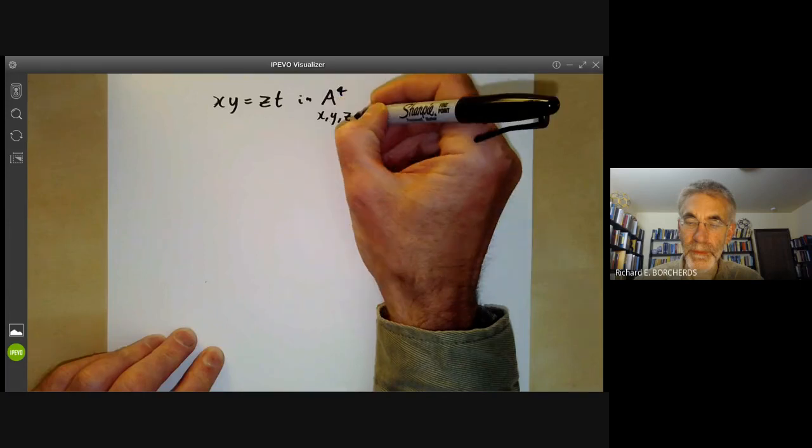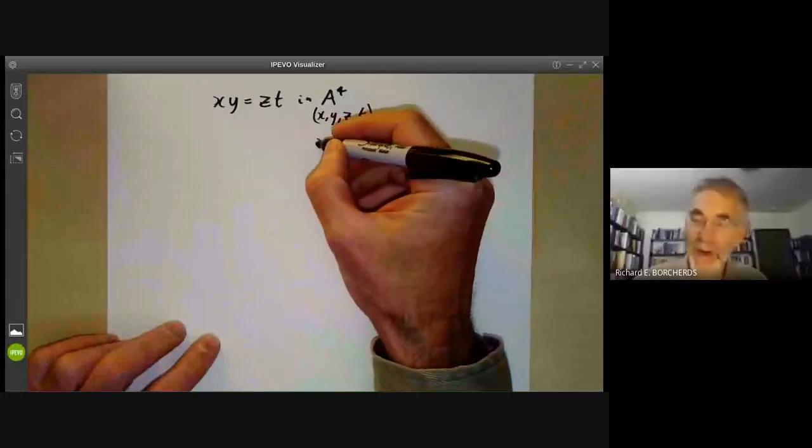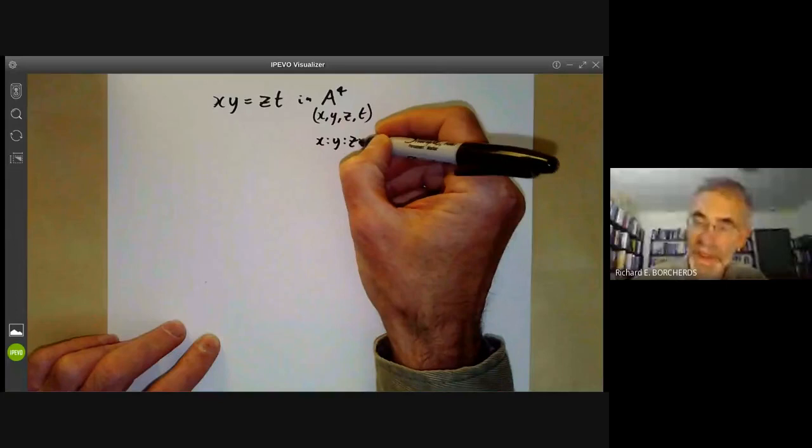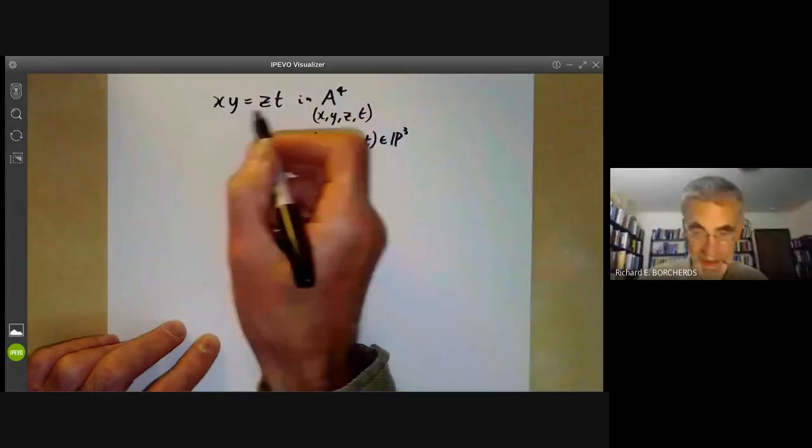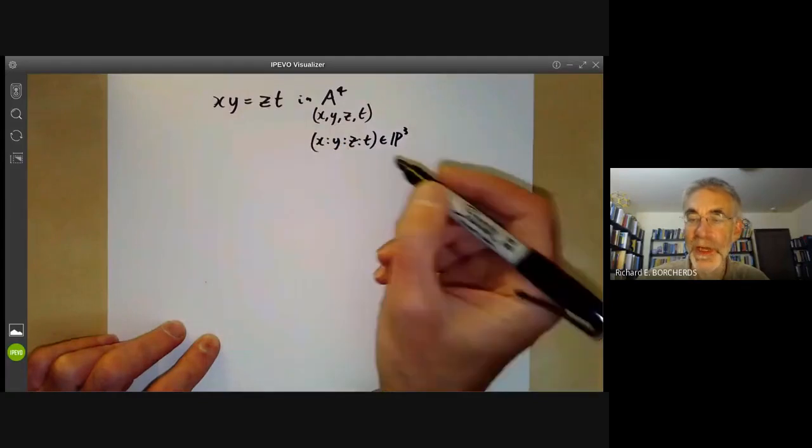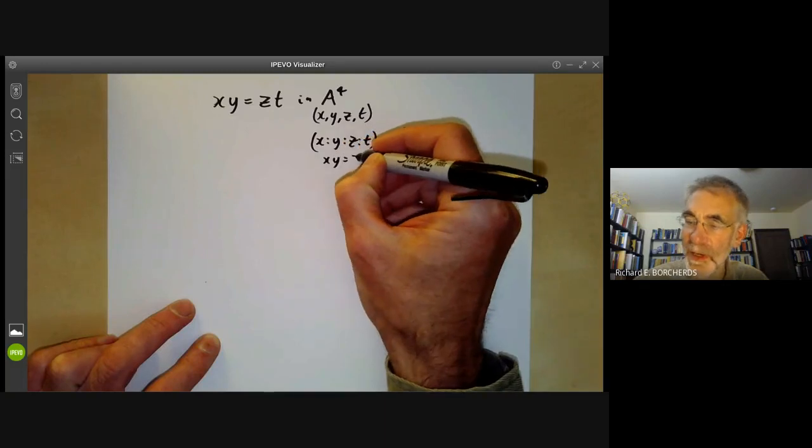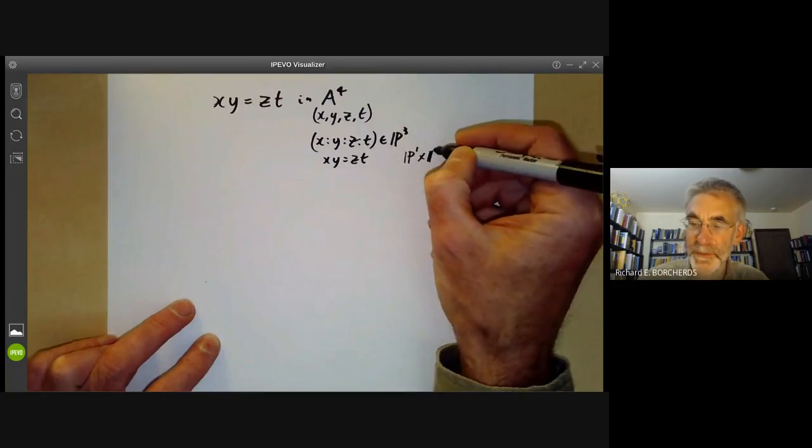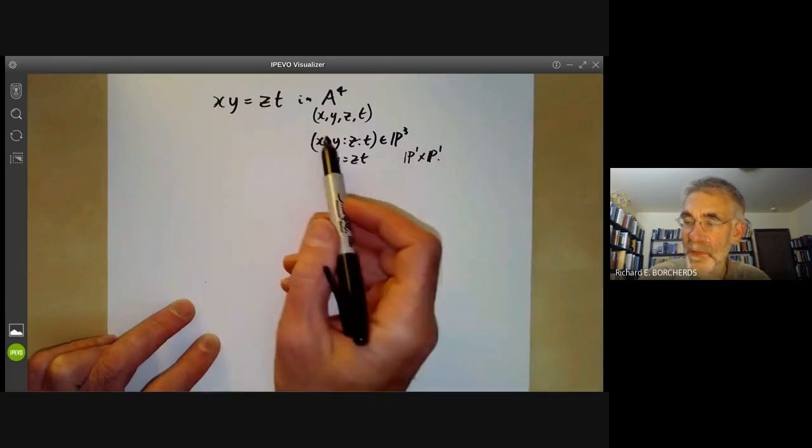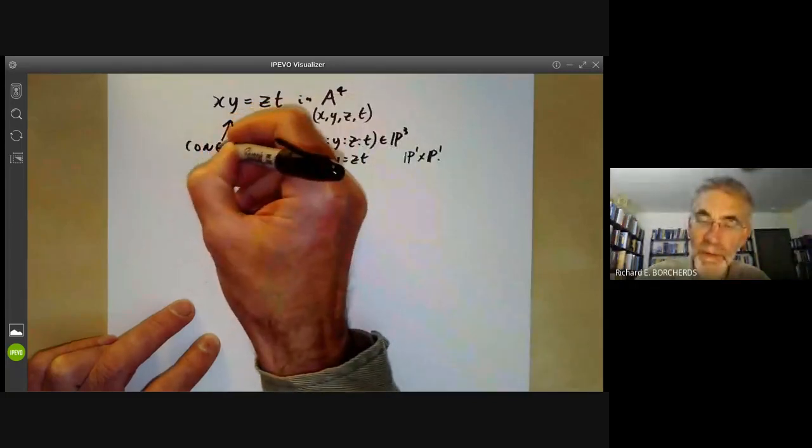The first thing to do is see what this variety looks like, and it's actually like a cone over P1 times P1. This is because we can also look at the corresponding variety consisting of points in projective space satisfying this condition, since this is a homogeneous equation. This is a quadric in projective space, so the set of points of xy = zt is a quadric in P3. We saw earlier that gives us a product of two projective lines, so in projective three-space we get a product of two lines. In affine four-space this is more or less a cone over a product of two lines.